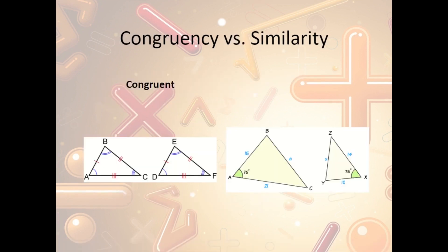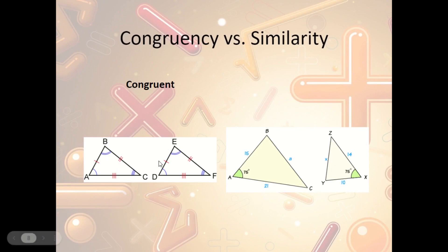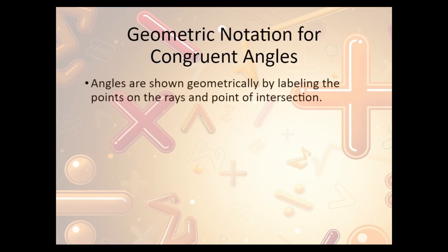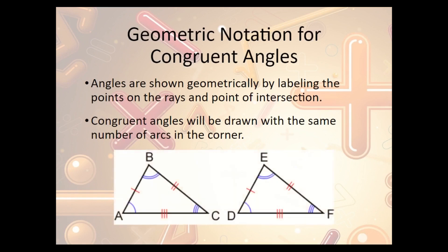Congruent figures have all the same sizes — both triangles have exactly the same angle measures and same side lengths. Similar means blown up or shrunk down: proportional but not the same size. Geometrically, congruent angles are shown with arcs in the corners: a single arc on two angles means they are congruent, a double arc pair means those are congruent, and a triple arc pair means those are congruent.